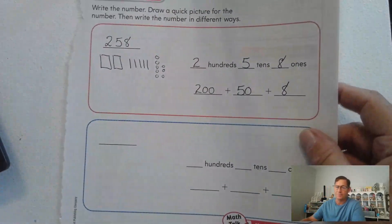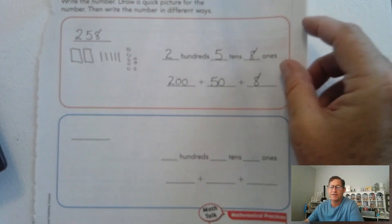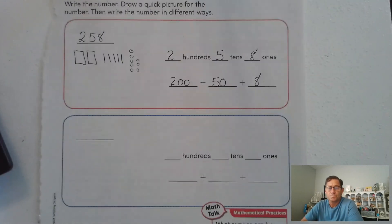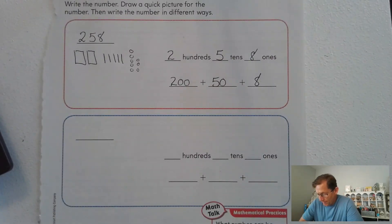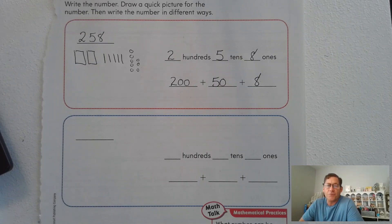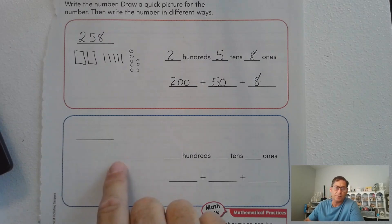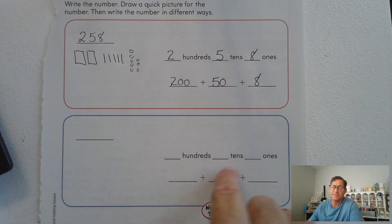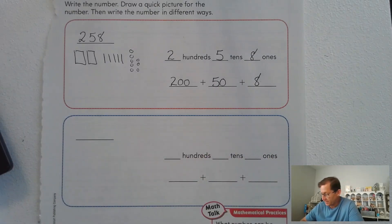Do the same thing for the following number. Pause the video after I give you the number. Write the number three hundred twenty-five on the line. Then draw a quick picture, tell me how many hundreds, how many tens, and ones, and what is each place value's value. Go ahead and pause the video and do that.